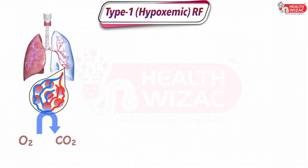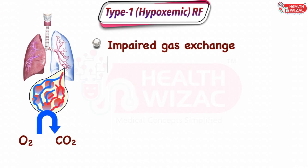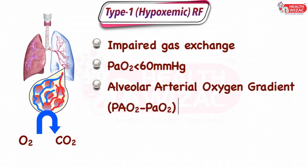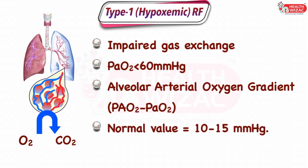Type 1 or hypoxemic respiratory failure results due to impaired gas exchange and presents with a PaO2 of less than 60 mmHg, which can be detected with the help of ABG test. The approach includes calculating the alveolar-arterial oxygen gradient, i.e. PAO2 minus PaO2, which has a normal value of 10 to 15 mmHg.